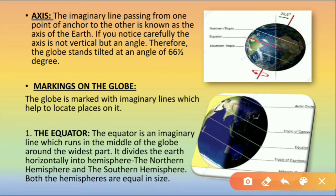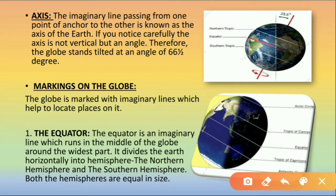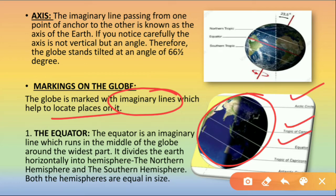Now let us move to the next point: markings on the globe. When you see a globe there are different imaginary lines and markings. In real there are no lines on the earth, but imaginary lines are drawn on the globe which help us to locate a place. These markings help us to understand where the different places are and where they are located.